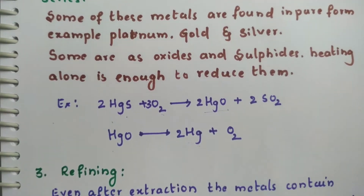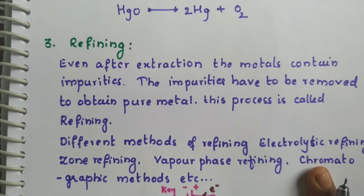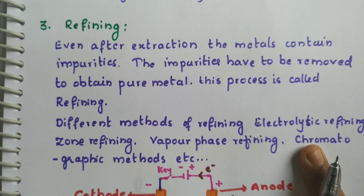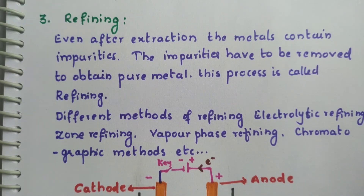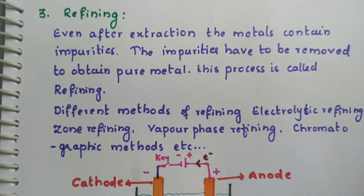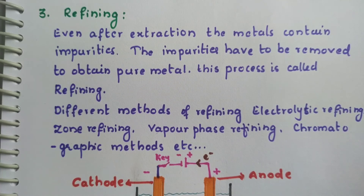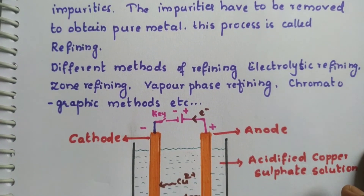The next step in extraction of metals is refining — further purification by removing all impurities. There are many refining methods such as zone refining, vapor phase refining, and chromatographic methods, which you will learn in 12th standard. In 10th standard, we are going to learn only electrolytic refining.